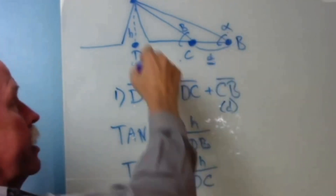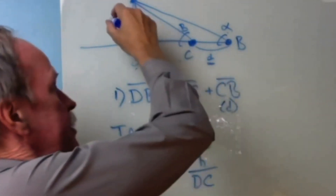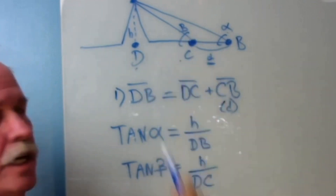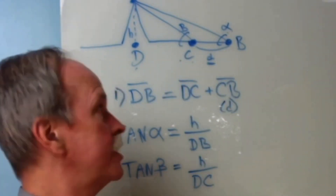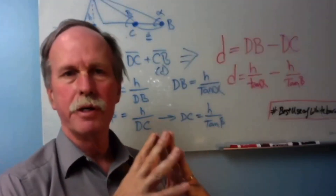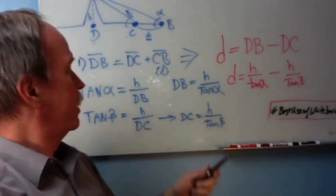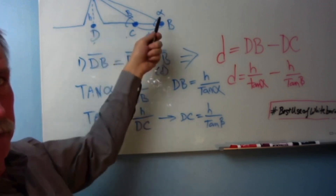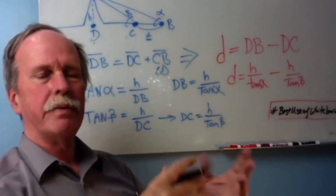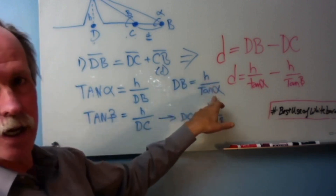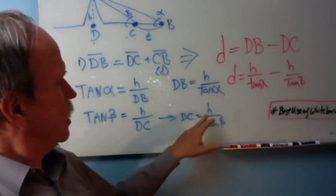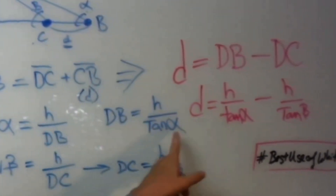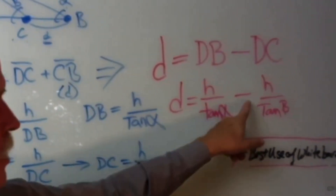The tangent of angle alpha, which is the far angle on the right, is going to be the height of the mountain over DB. The tangent is the opposite over the adjacent — that's the TOA. Likewise, tangent of angle beta is going to be the height of the mountain over DC, which is that segment of the line. So let's rewrite this: DB equals H over tan alpha, and DC equals H over tan beta. Little d, the distance we measured, equals DB minus DC. Now we can substitute these values in for DB and DC, so we get: D equals H over tan alpha minus H over tan beta.